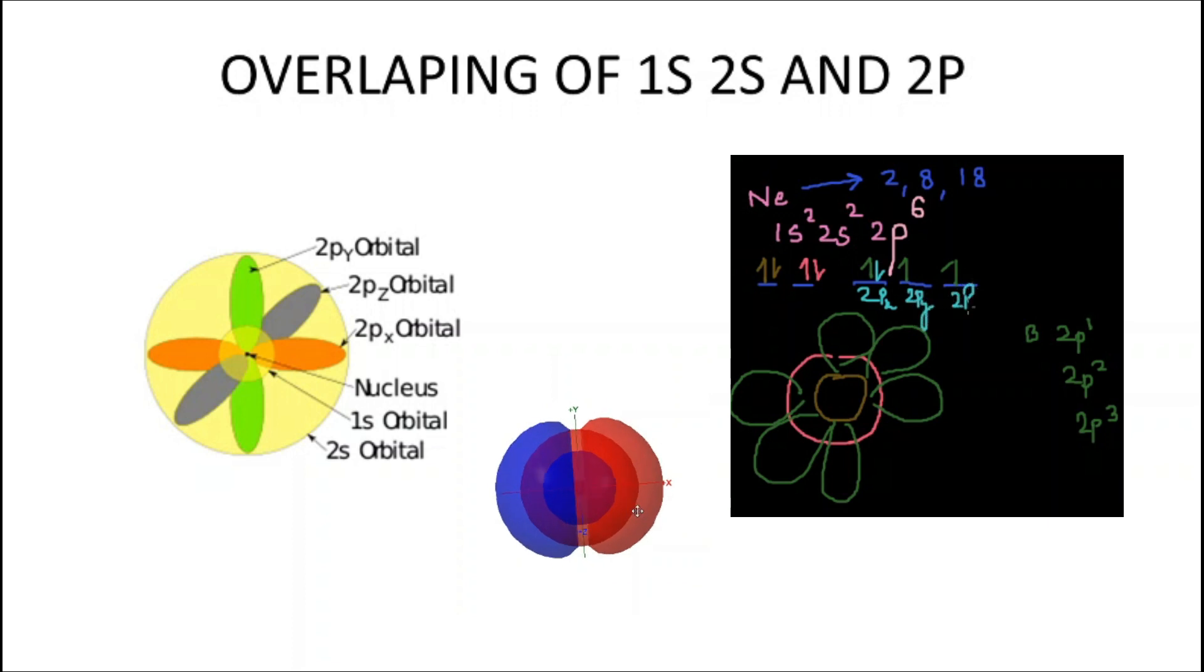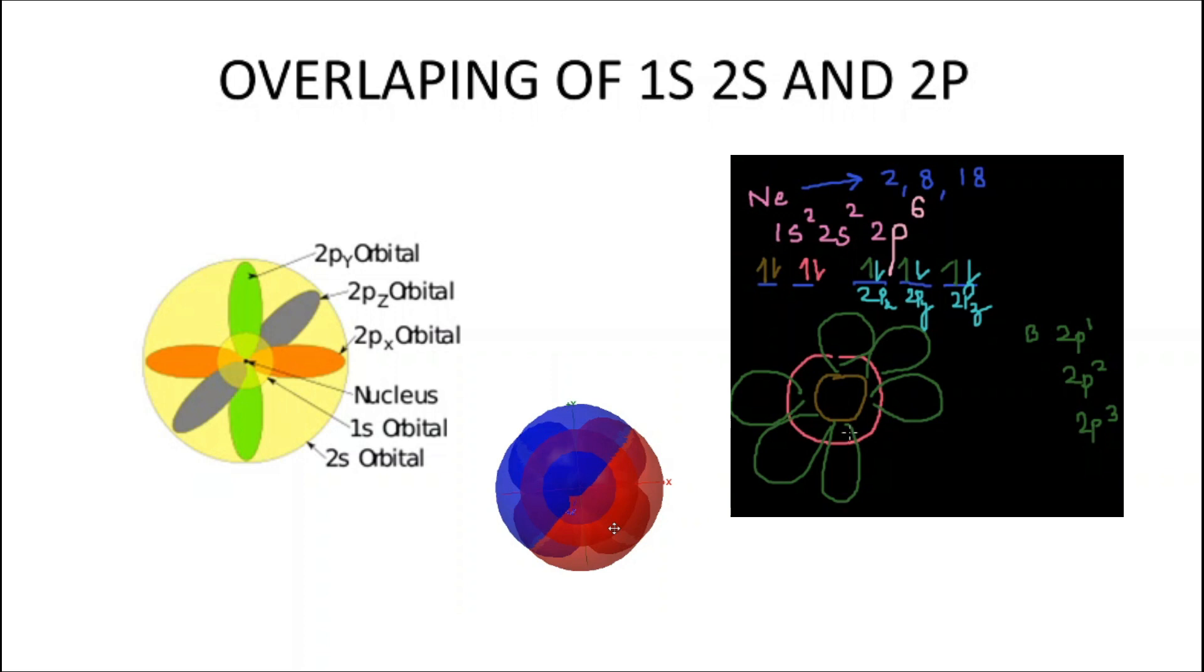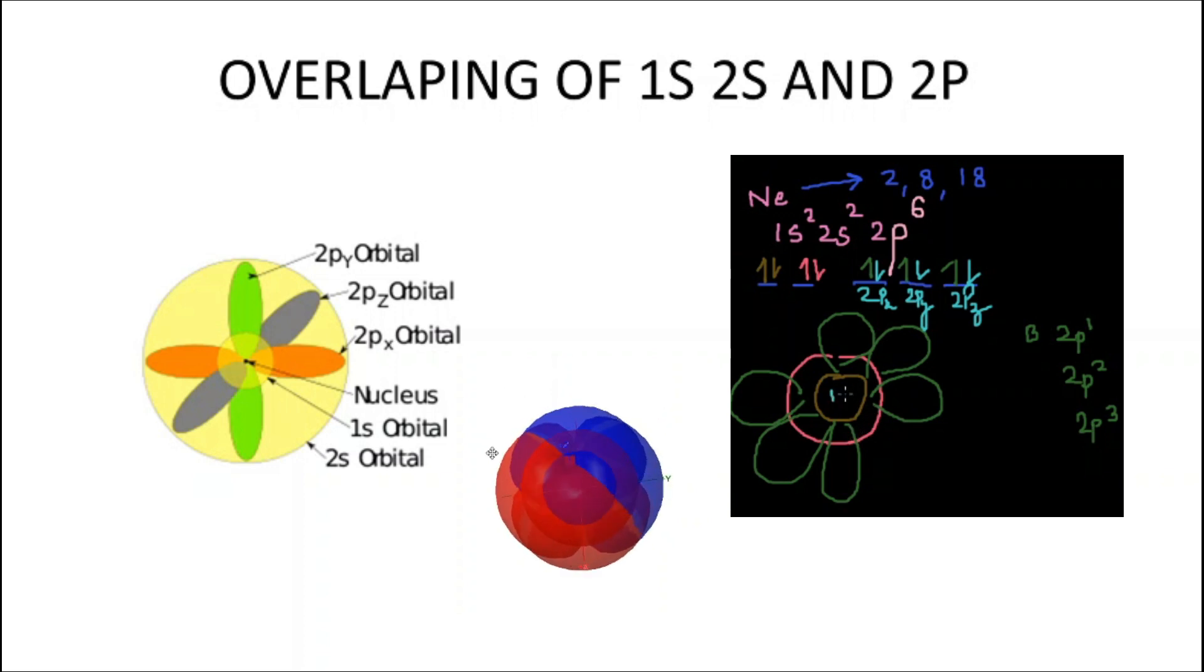So, on the whole, this is the overlapping of 1s, 2s, and 2p. The first electron is filled in 1s, then 2s, then 2p. For better understanding, let us take a look at the 3D picture.